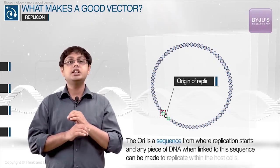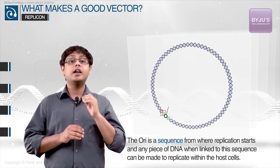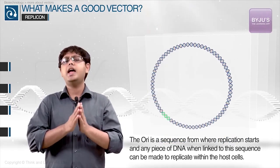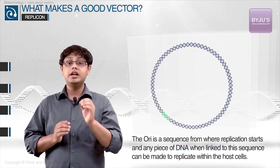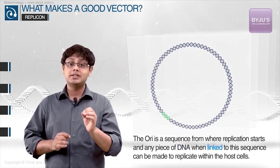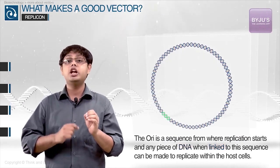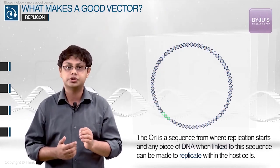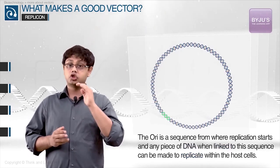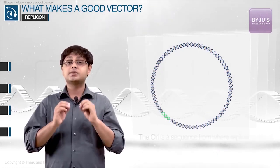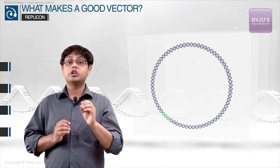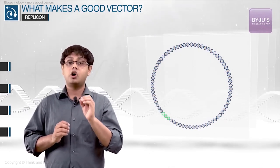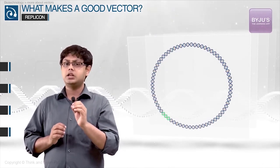The ori is a sequence from where replication starts, and any piece of DNA linked to this sequence can be made to replicate within the host cell. This sequence is responsible for controlling the copy number of the linked DNA.